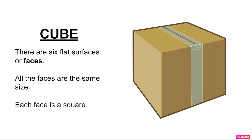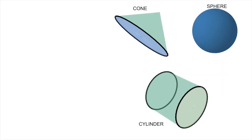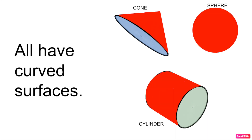Let's look at these three shapes: a cone, a sphere, and a cylinder. What do you notice when you look at these shapes? One thing I notice is that they all have curved surfaces.